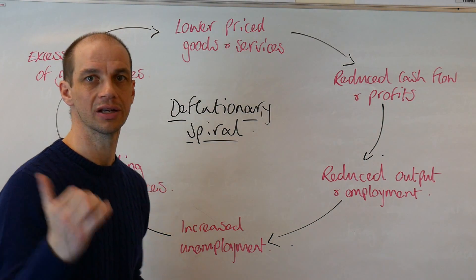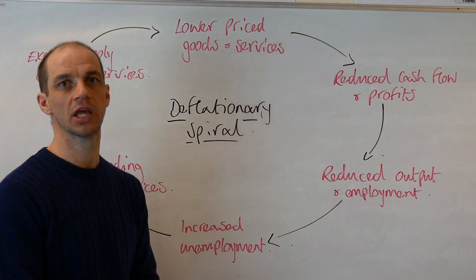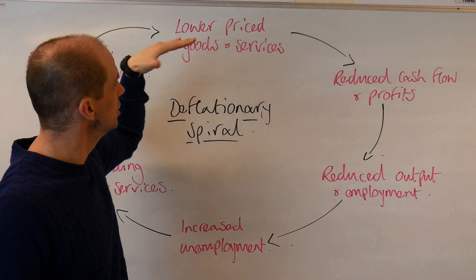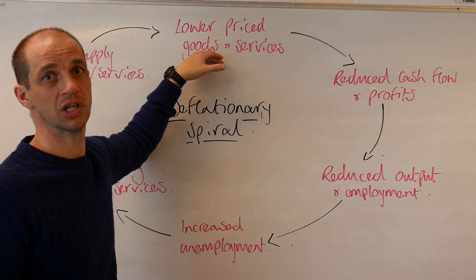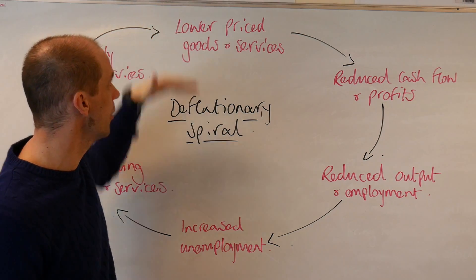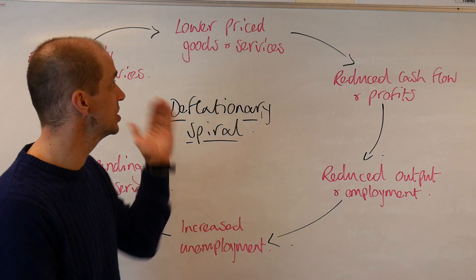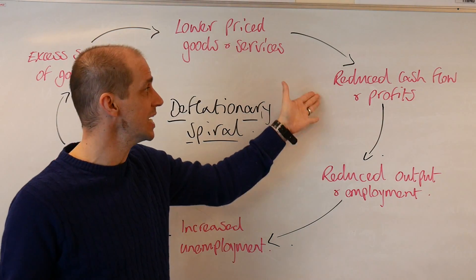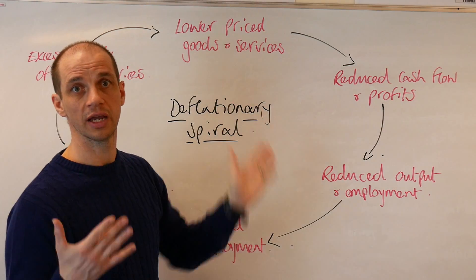Let's look now at deflationary spiral and why this can really pose problems for the economy. Deflation is about that general fall in the price level over a sustained period of time. So we see lower priced goods and services — that's our obvious starting point. But what does this mean for businesses? Well, it's going to mean that businesses will have less cash inflows because they're getting less for their goods and services.